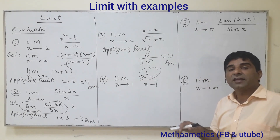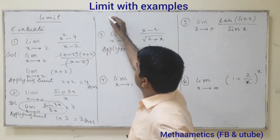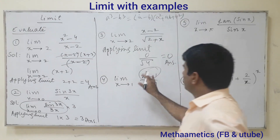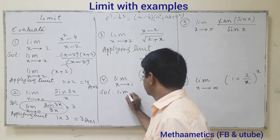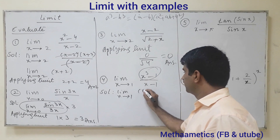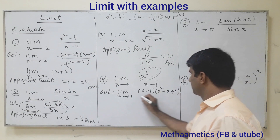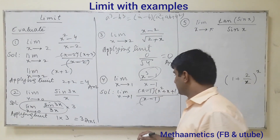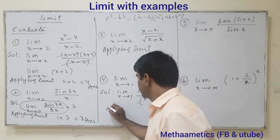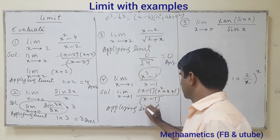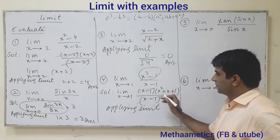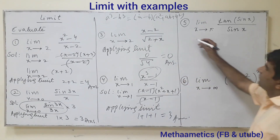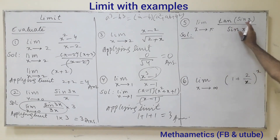Question 4: We can resolve this by finding factors using the identity a³ minus b³ equals (a minus b)(a² plus ab plus b²). By decomposing, limit as x tends to 1 of (x³ minus 1) upon (x minus 1) becomes (x minus 1)(x² plus x plus 1) upon (x minus 1). The (x minus 1) terms cancel. Applying the limit, we get 1 plus 1 plus 1, which equals 3.